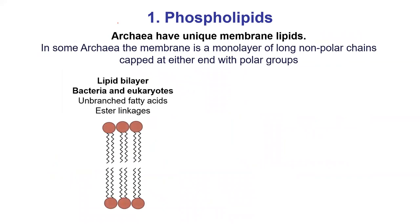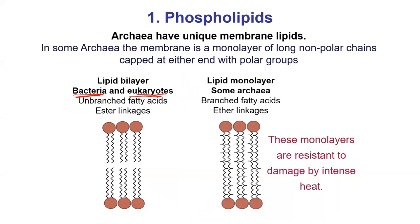We'll talk about archaea in topic five. One way archaea are unique is in their phospholipids. While bacteria and eukaryotes have phospholipids in the form of a bilayer, archaea have unique lipids — some are branched and some form monolayers. So their membranes can be a little weirder and unique — just another reason why archaea are different.